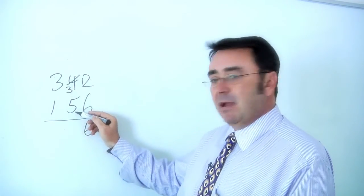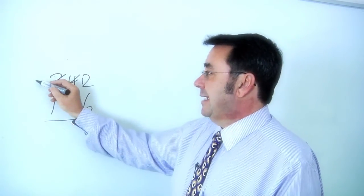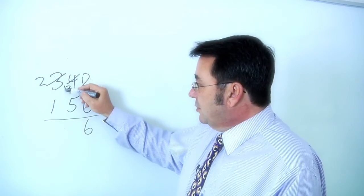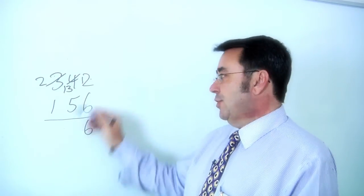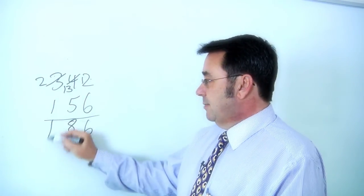3 take away 5 for the tens column now. Again, not enough tens, so I need to borrow 10 tens from the hundreds column, which gives me 13. 13 take away 5 leaves me with 8. And 2 take away 1 gives me 1.